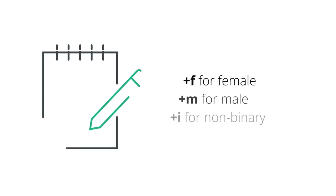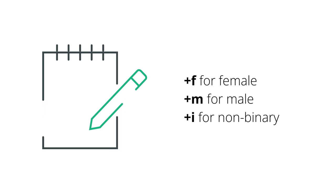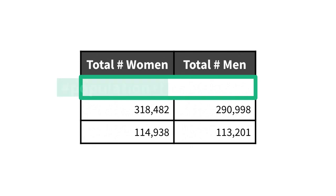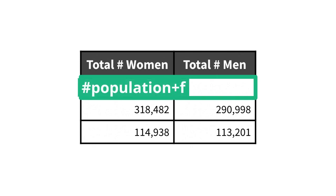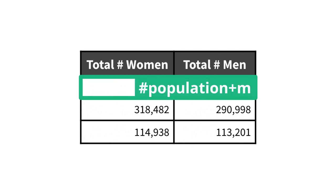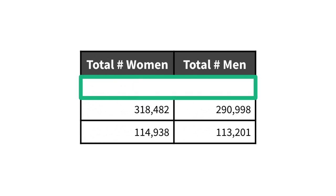There are three attributes that we use to disaggregate by sex: +F for female, +M for male, and +I for non-binary individuals. In this example, we would use #population+F for the total number of women in the population, and #population+M for the total number of men.